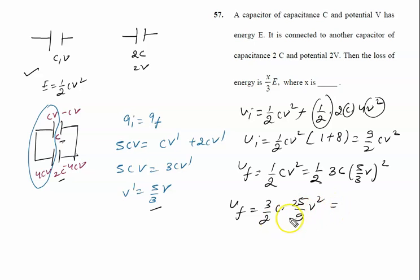Further, we will solve. It is 25 by 6 CV square.